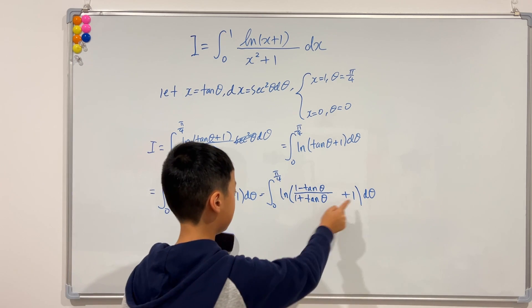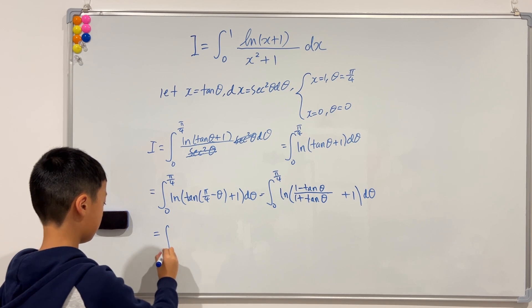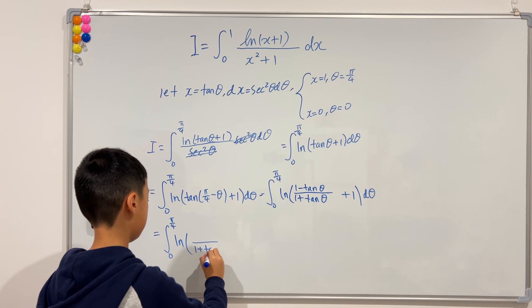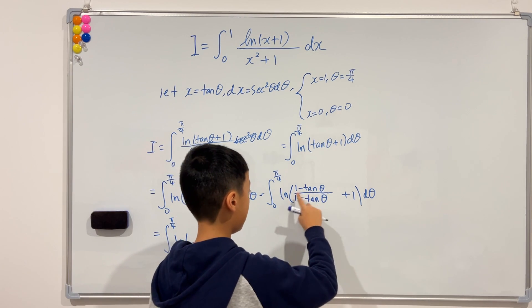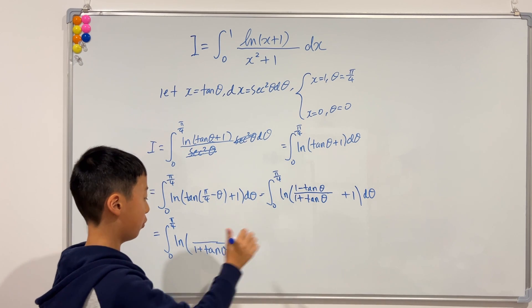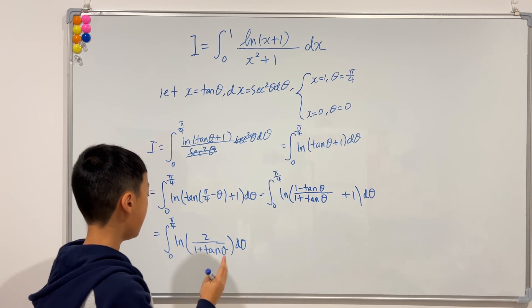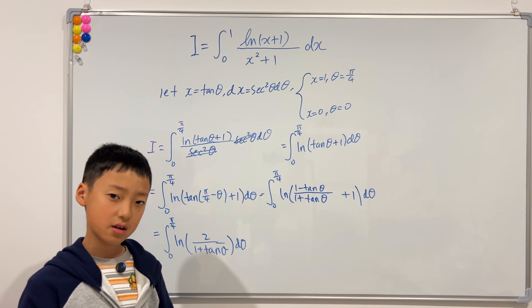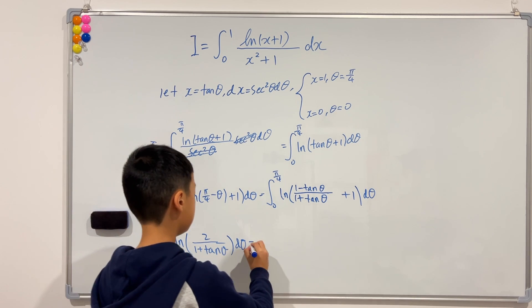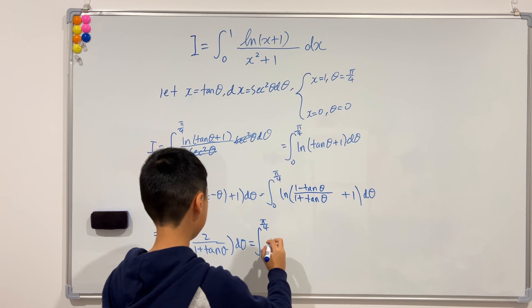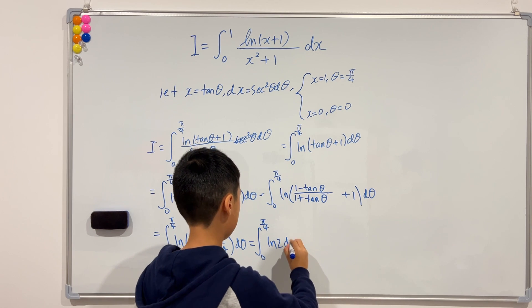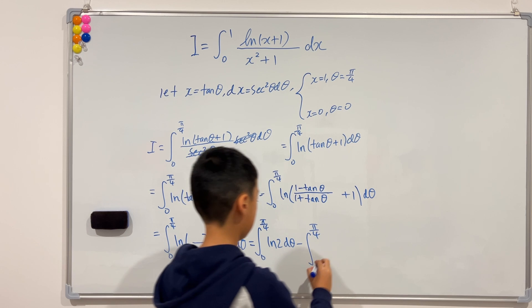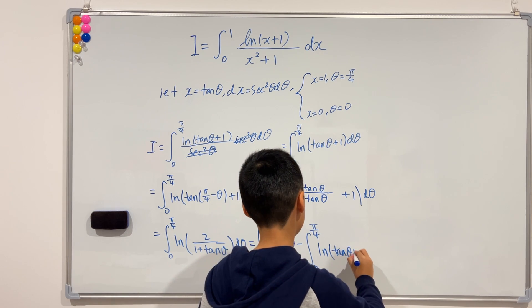Now we can add the fractions inside the logarithm. The tangent theta terms cancel in the numerator, giving 2 over (1 plus tangent theta). We then split this using ln(a/b) = ln(a) minus ln(b), giving us the integral from 0 to pi over 4 of ln(2) d theta, minus the integral from 0 to pi over 4 of ln(tangent theta plus 1) d theta.